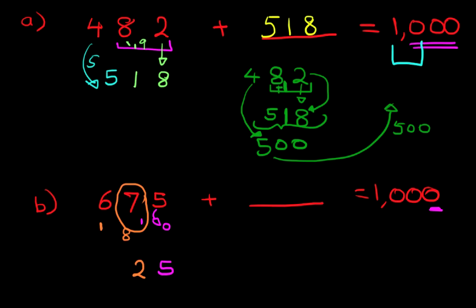Now the hundreds has become 7. What number added to 7 gives us 10? The answer is 3. And that is our answer. 325. 675 plus 325 equals 1000. Now this looks a little bit messy, but trust me on this.